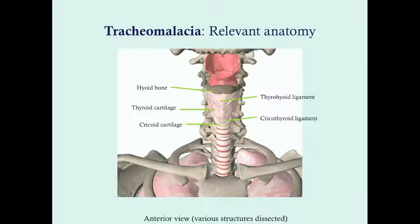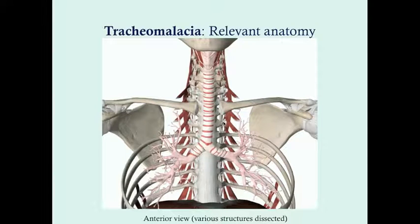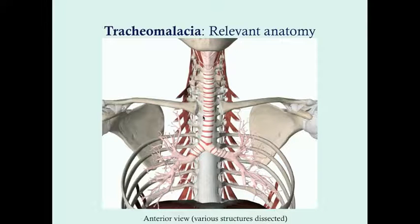Between the Adam's apple and cricoid cartilage there's a small depression — that's the cricothyroid ligament, where you insert the trach tube. Here we have ribs and structures dissected, showing how long the trachea is before it bifurcates into the right and left main stem bronchi. Tracheomalacia tends to affect the lower one-third of the trachea, which is entirely intrathoracic. There is also an extrathoracic trachea in the neck.